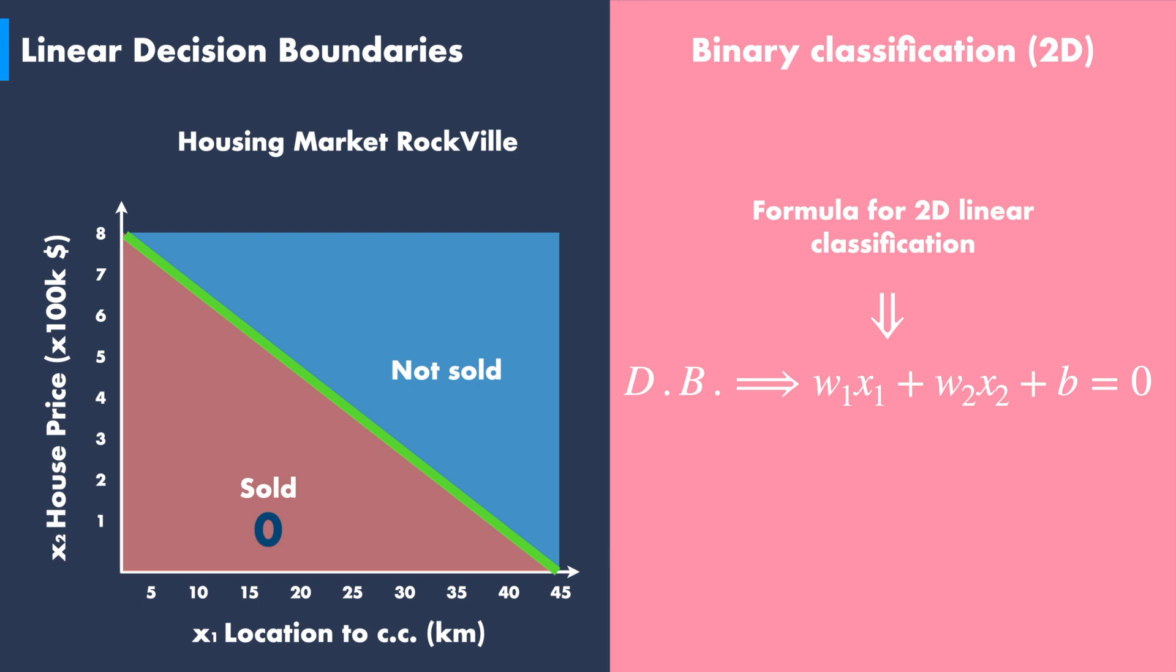At the same time, any data point above this line belongs to a house that is not likely to be sold within a year. We can get a fairly good estimate of the values of w1, w2, and b using the two points method to compute the equation of a line.